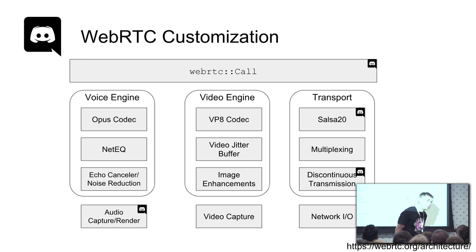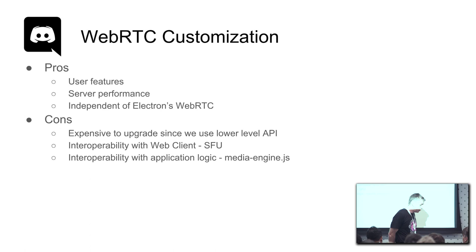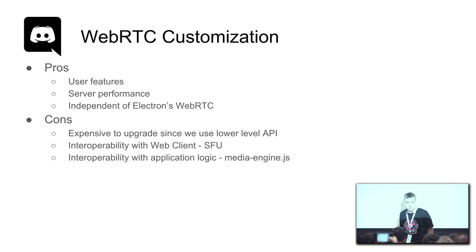I took this architecture diagram from the WebRTC site. These are the parts of WebRTC that we customize: audio processing, transport, and we added some API to the WebRTC call. The advantages of customizing WebRTC are that we can provide users the features they want, and it also enables us to enhance our server performance, which I will talk about later.